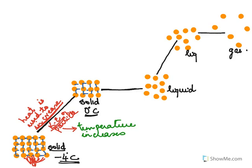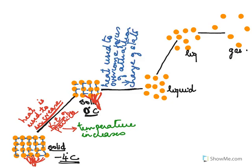When the particles reach 0 degrees — that is the melting point — heat is still being supplied. Now, this heat is used not to increase the temperature but to overcome the forces of attraction. It overcomes the forces of attraction and we get a liquid. The particles gain kinetic energy and overcome the forces of attraction, causing a change of state.